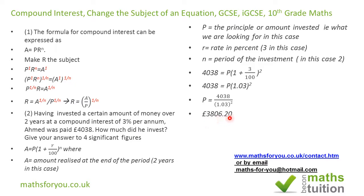This gives us P equals 3806.20, but we are asked to give the answer to four significant figures, so counting 1, 2, 3, 4 — the answer is £3806.